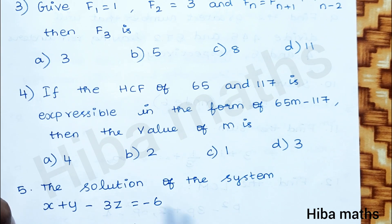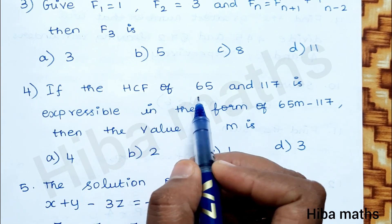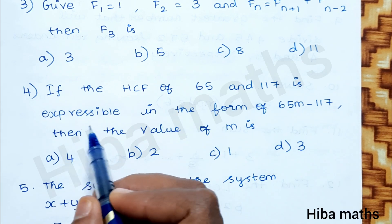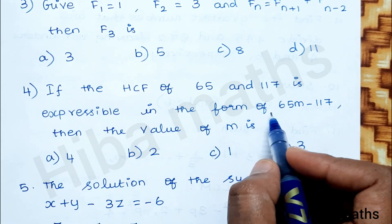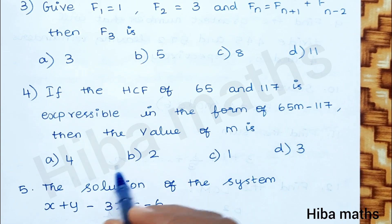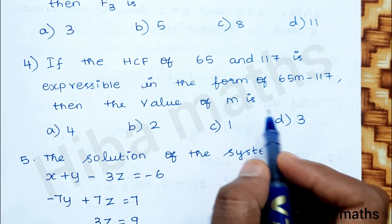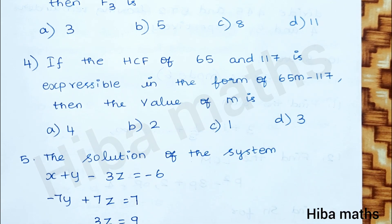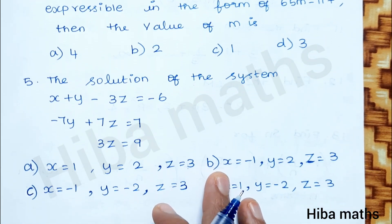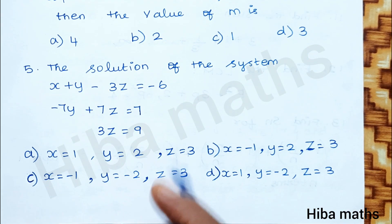Fourth question: If the HCF of 65 and 117 is expressible in the form 65m minus 117, then find the value of m. That means finding the solution of the system — we will give you the solution of the system.